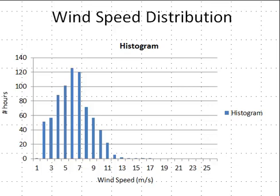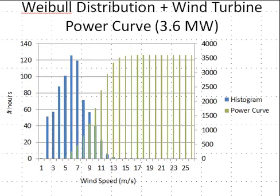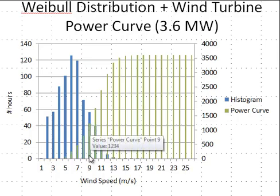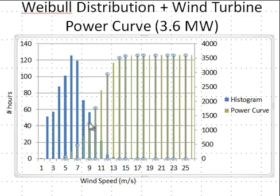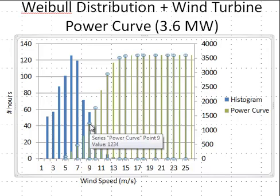Let's overlay on top of this a wind turbine power curve. We don't typically see power curves drawn out like this, but we're using a bar chart to show where they overlap and to signify that we're going to multiply these two values together. The amount of power produced within each wind speed bin is multiplied by the number of hours the wind spends at that speed.